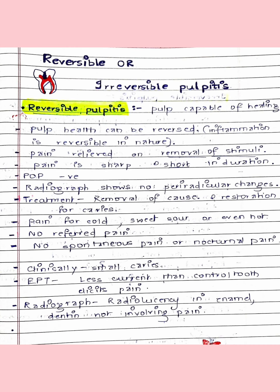Coming to the diagnosis of pulpal diseases — reversible versus irreversible pulpitis. Reversible pulpitis means the pulp is capable of healing and pulp health can be restored. There is pain only on stimulus — for example, a person had pain while eating ice cream, but the pain immediately stopped after they stopped eating. So pain is relieved on removal of stimulus. The pain is sharp and of short duration. Percussion test is negative — no pain on percussion. Radiograph will show no periapical or periradicular changes.